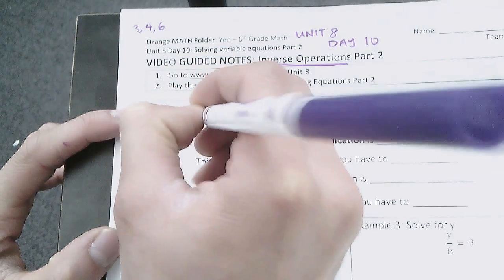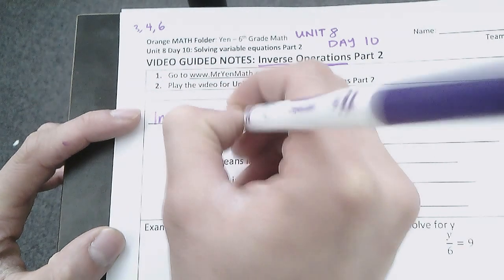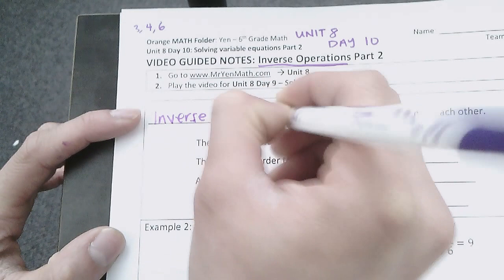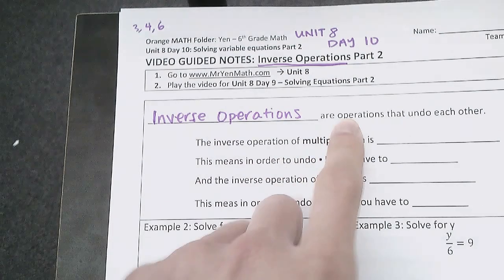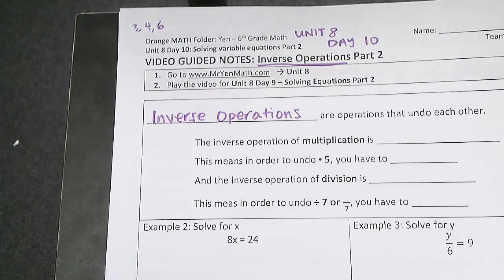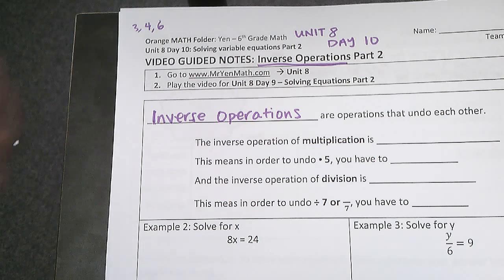All right, let's jump into it. So yesterday we learned that inverse operations are operations that undo each other. We talked about addition—how the opposite is subtraction—and how for subtraction the opposite is addition.